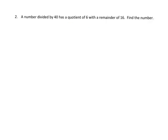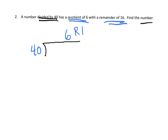Let's practice this with a word problem. It says a number divided by 40 has a quotient of 6 with a remainder of 16. Find the number. So this word problem, we have a division problem. It says a number divided by 40, so that means 40 goes here. Has a quotient of 6, so that means the 6 is going to go right here. And a remainder of 16, so there it is.